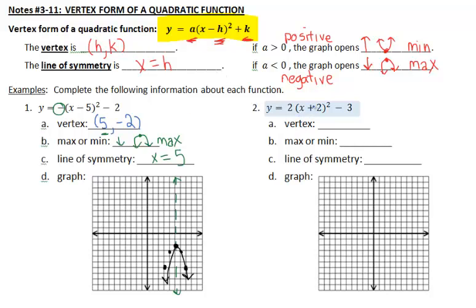Next one, vertex, again, opposite of what's on the inside, so that's going to be negative 2, comma, and we keep this one the same, negative 3.